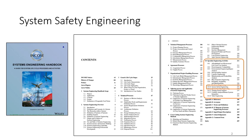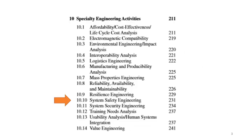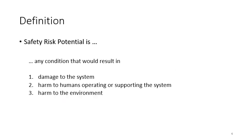The System Engineering Handbook has ten chapters. Chapter 10 has a list of specialty engineering activities, and Chapter 10.10 discusses system safety engineering.